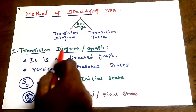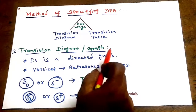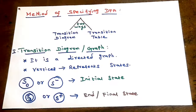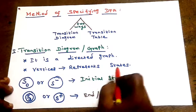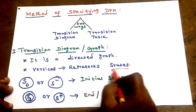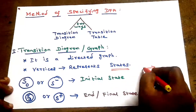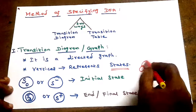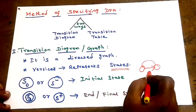A transition diagram is also called a transition graph. It is a directed graph, also known as a digraph. It has vertices and edges where each edge connects one state to another state.